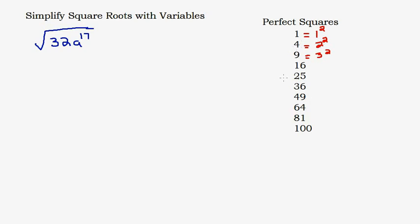So how does this relate to variables? Let's take X — if I square X, I get X squared, making X squared a perfect square. The next exponent up would be X squared; if I square that, I multiply the exponents and get X to the fourth.